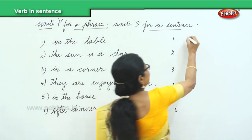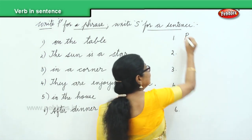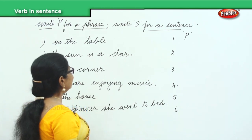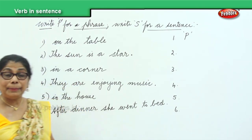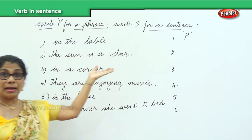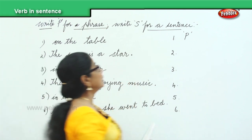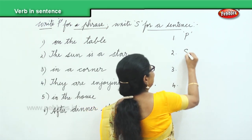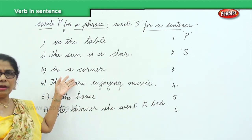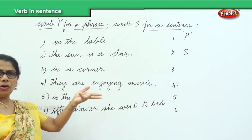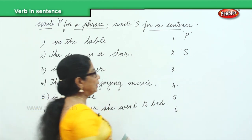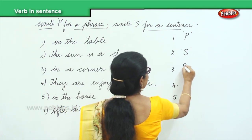On the table — you write P for phrase. The sun is a star — it is a complete sentence. It begins with a capital letter, ends with a full stop, and makes complete sense — so that is a sentence, S. Third one: in a corner — it is only a phrase because this group of words does not make complete sense. Third one is a phrase, P.